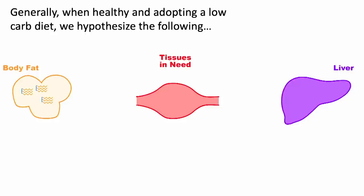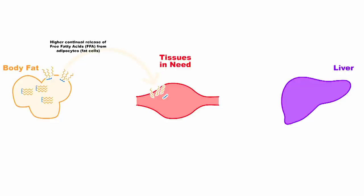We hypothesize that generally when healthy and adopting a low-carb diet, you're going to see a little bit more free fatty acids released from your body fat, and that's good because that can be used by tissues in need. This in turn can also allow for more fatty acid uptake by the liver, which can likewise allow for ketogenesis — which helps break down those fatty acids to turn them into ketone bodies that can also be used for tissues in need.